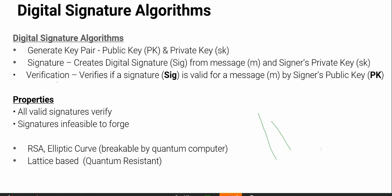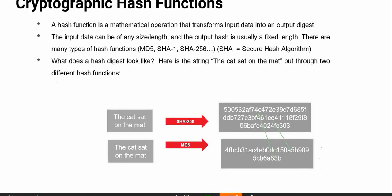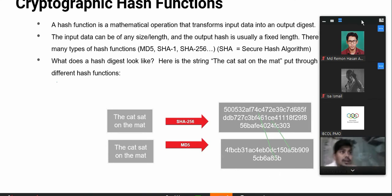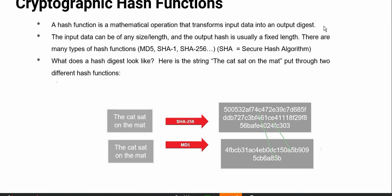Besides the signature and encryption, there's another very important thing you need to know, which is what we call a hash function. This will come up all the time in blockchain. A hash function — look at the example at the bottom — I have a string, which is a sentence: 'The cat sat on the mat.' If I apply the so-called hash function to it, it generates this random-looking output on the right. SHA, which stands for Secure Hash Algorithm, is one kind of hash function used by many blockchain networks — specifically SHA-256, which produces a 256-bit output.